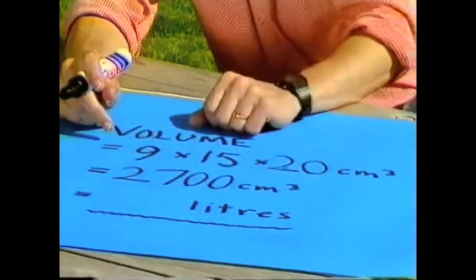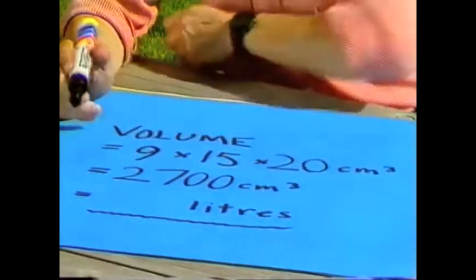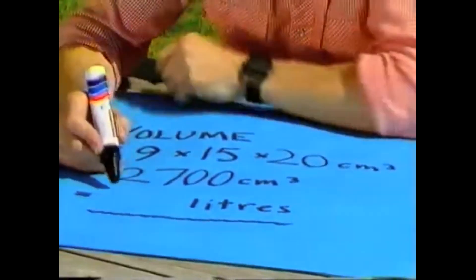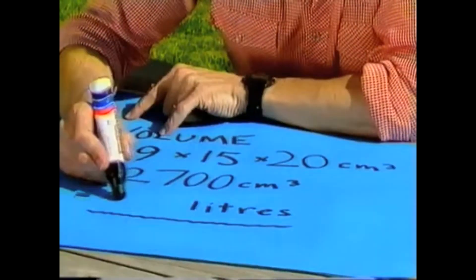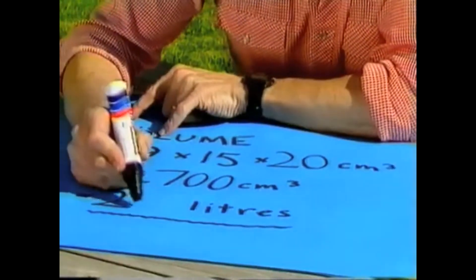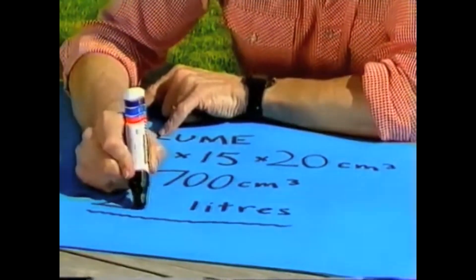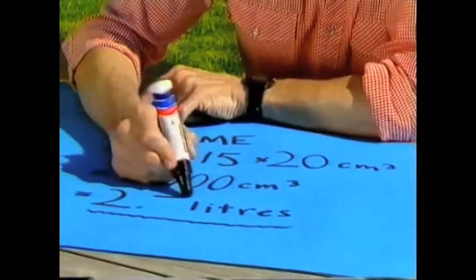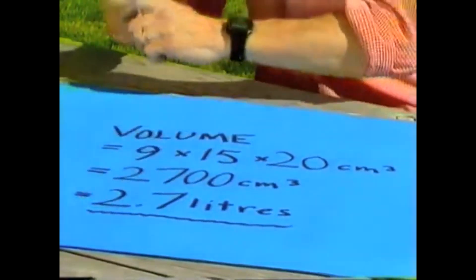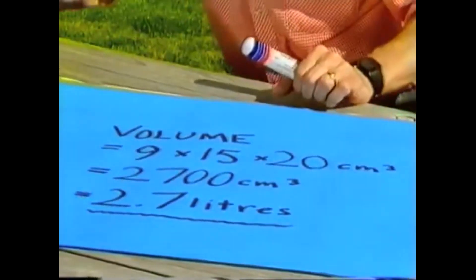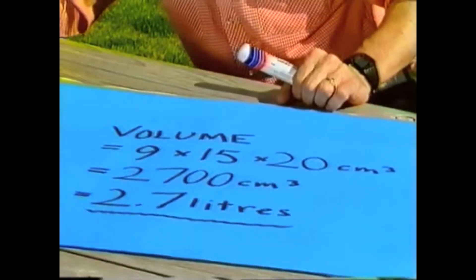Change that to liters — that's easy. Divide by 1,000 and we end up with 2.7 liters. So that's the volume of this container. Try that one on mom and dad.